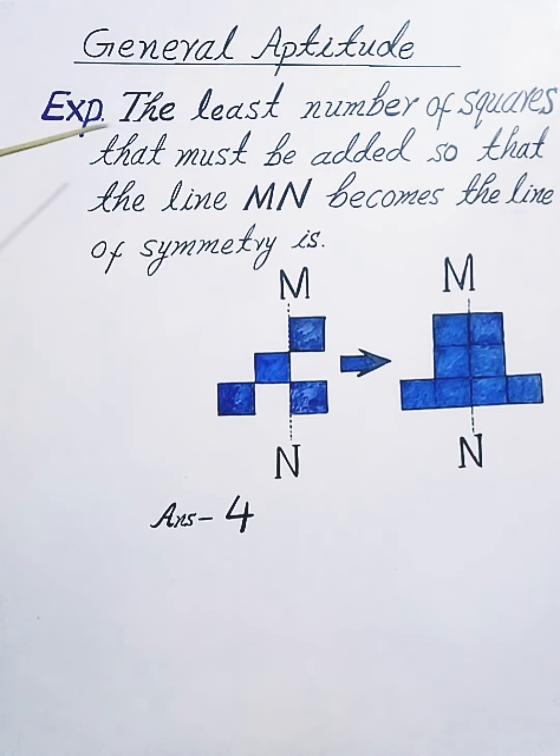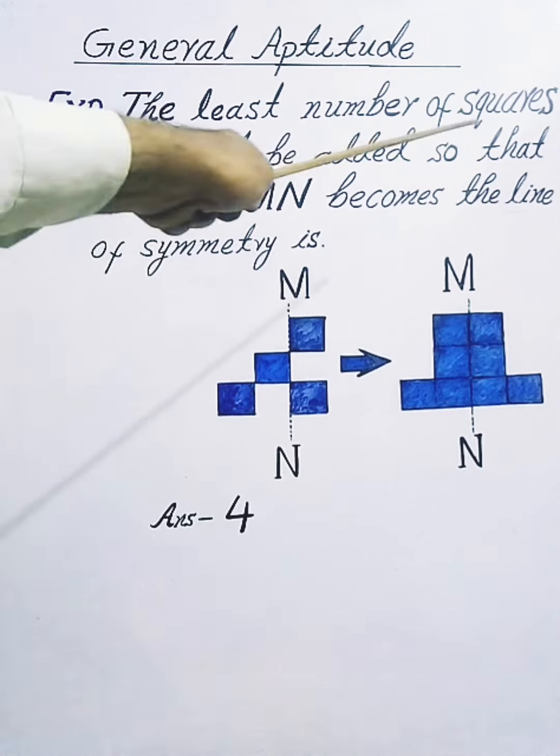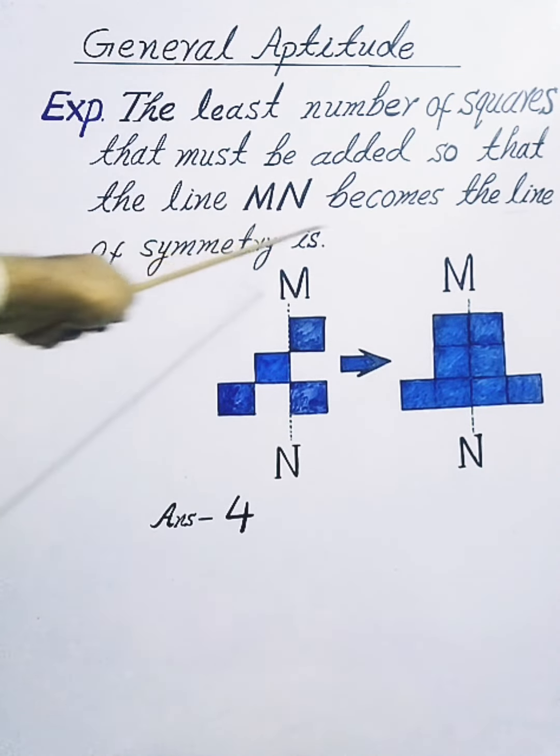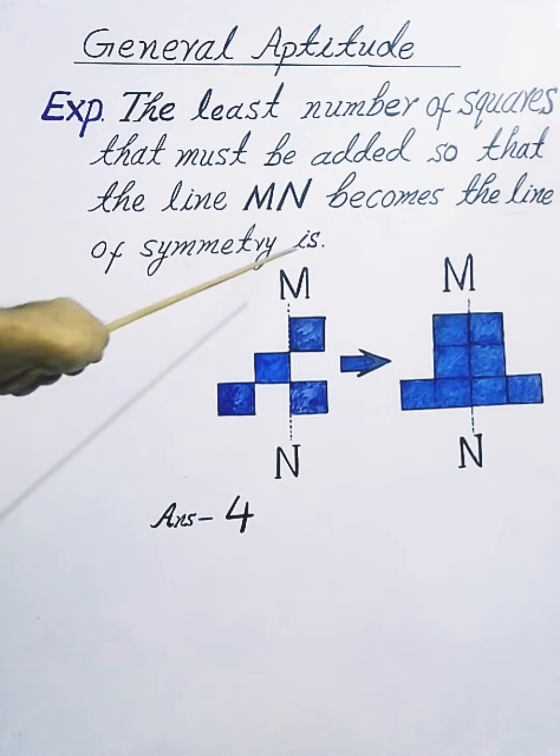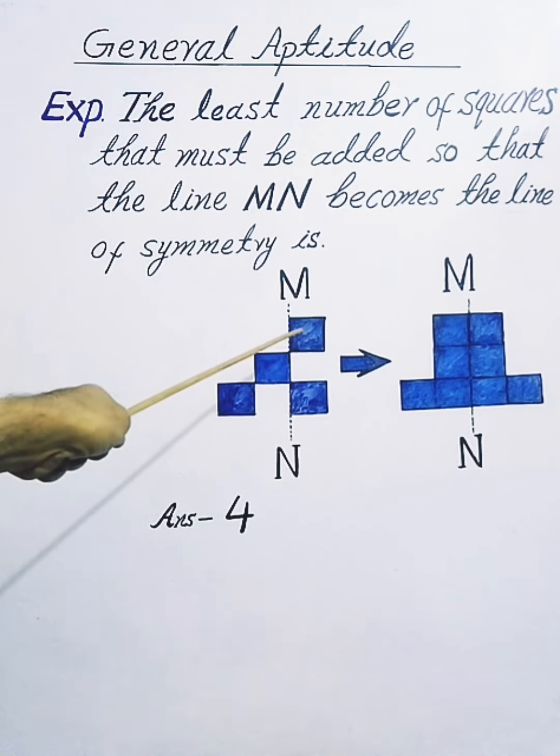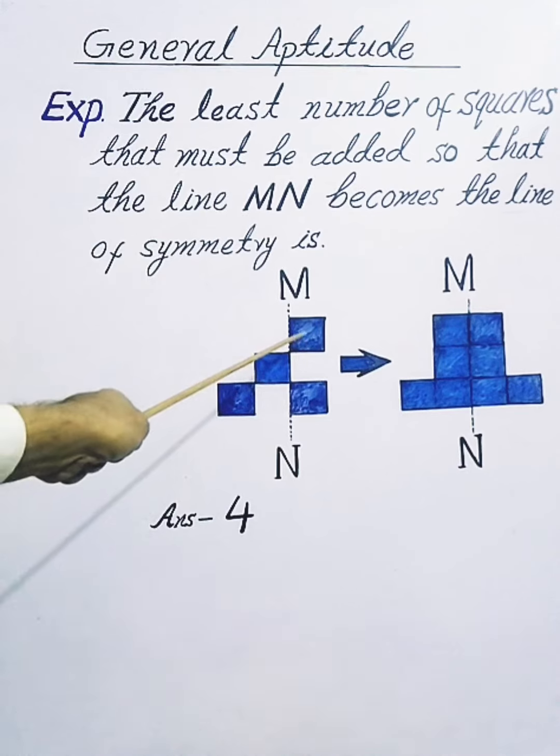Hello, example. The least number of squares that must be added so that the line MN becomes the line of symmetry is: this line MN, right-hand side 2 squares and left-hand side 2 squares.